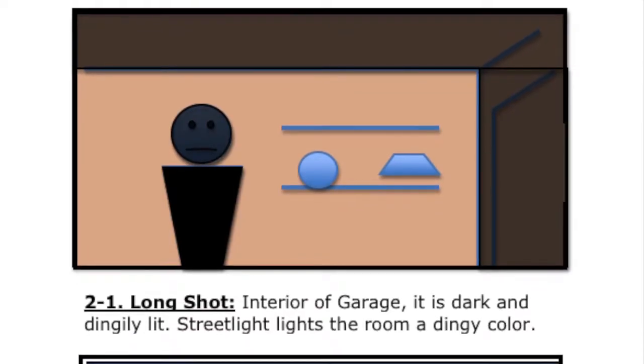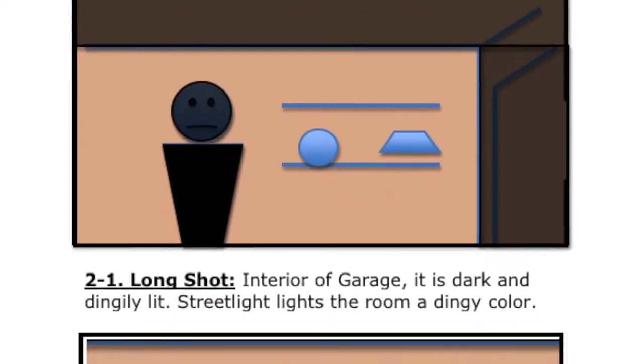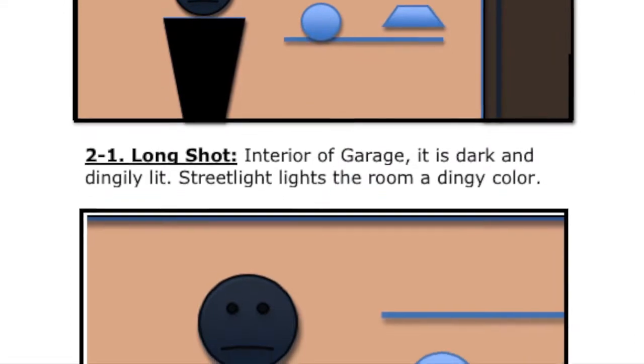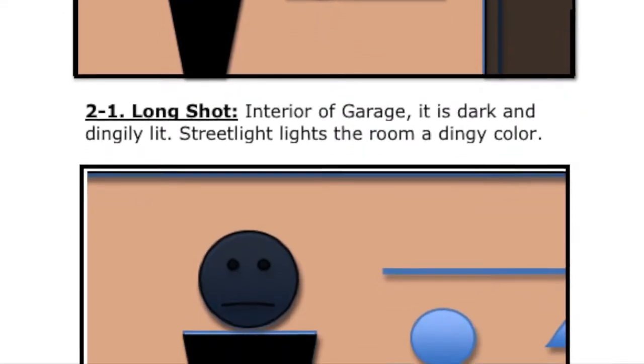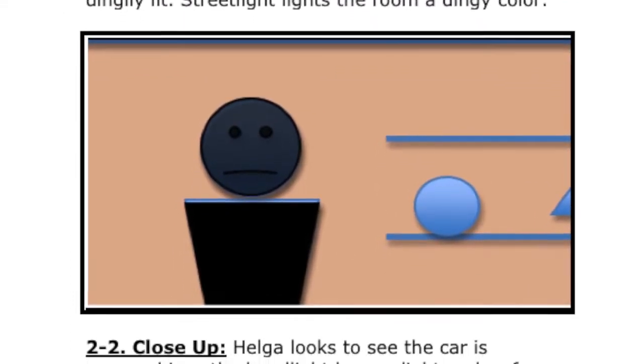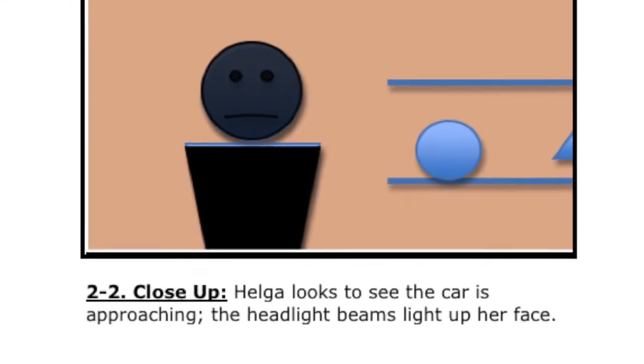Understanding this allows you to start planning for the lighting. To plan, you need to know the camera angle. How will the camera see the actor, action, or object? From the front? Back or side? Low or high? Square or slanted? What lens will be used for the shot — wide or tight?